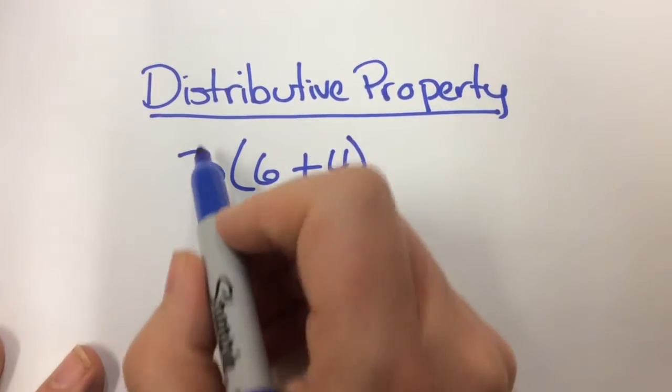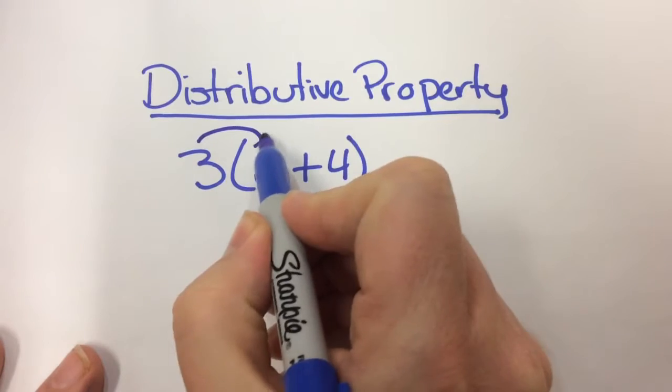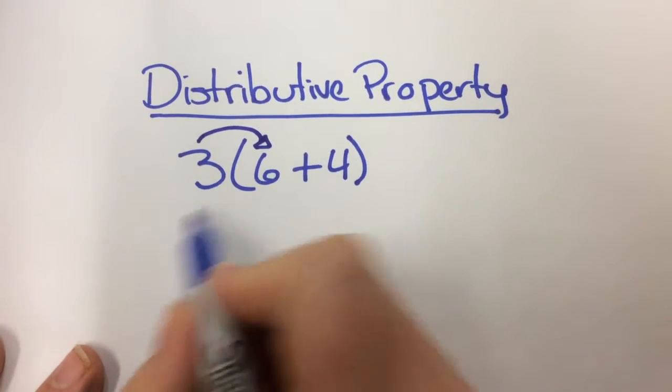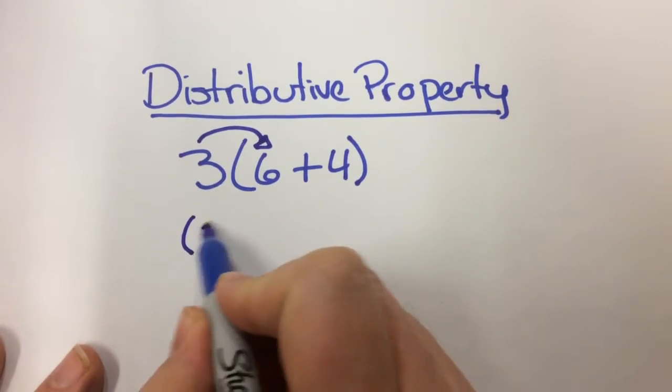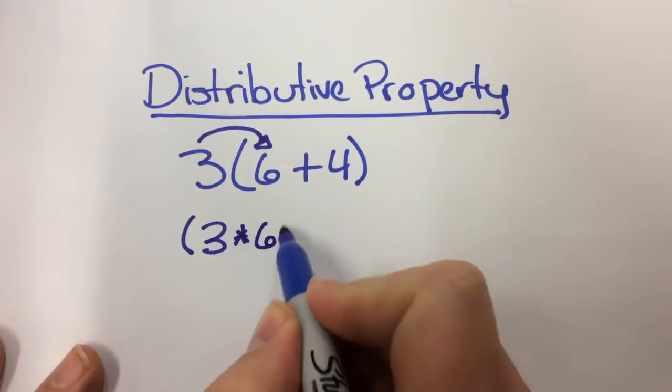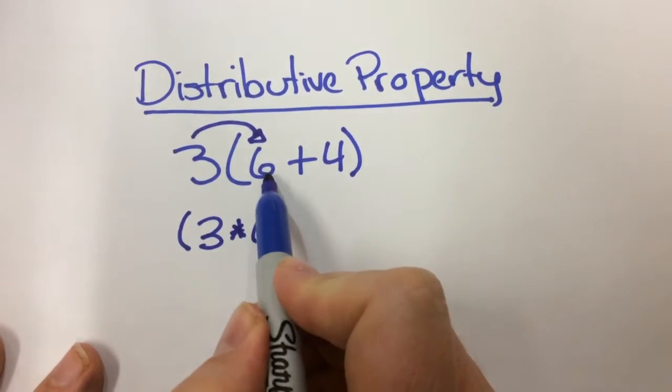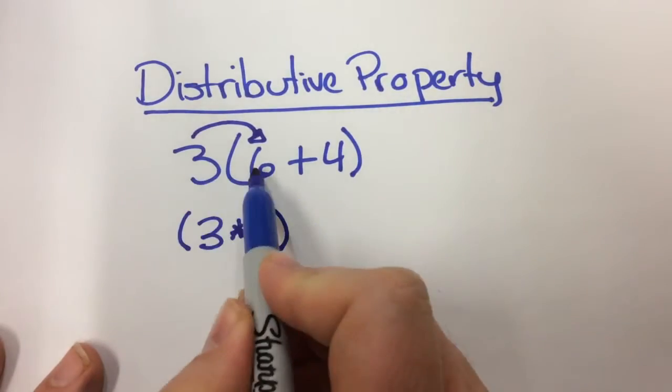So first you're going to take the 3 and you're going to distribute it to the 6. And you're going to give these their own parentheses. So you're going to do 3 times 6, because I did the 3 and I distributed it to the 6. So that's really 3 times 6.